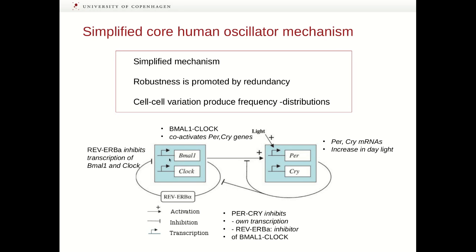First, transcription and translation of the BMAL1 and CLOCK genes give rise to a protein dimer that co-activates the PER and CRI genes. These genes are also activated by light, so a PER-CRI dimer increases during daytime. Next, expression of an orphan gene called REV-ERB-alpha inhibits the expression of the BMAL1 and CLOCK genes. Finally, the PER-CRY protein dimer also inhibits its own transcription, but also the transcription of the REV-ERB-alpha gene.